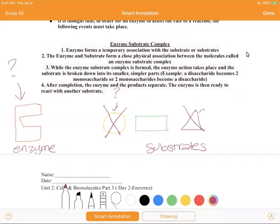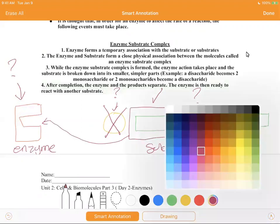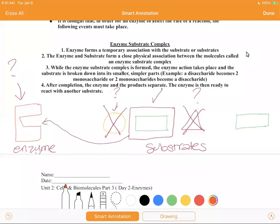Would it be the triangle? No. Again, they don't have the same complementary shapes. Would it be the rectangle? Yes, because this will be able to fit in there. And then once that fits in there, that's going to form what's known as an enzyme substrate complex.